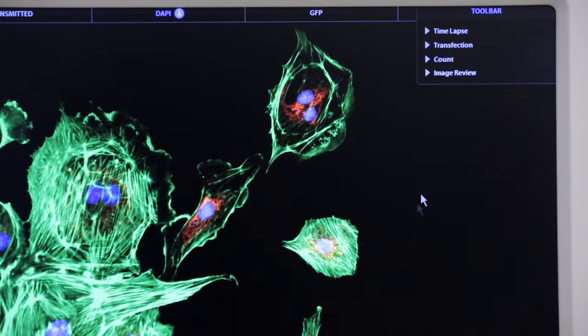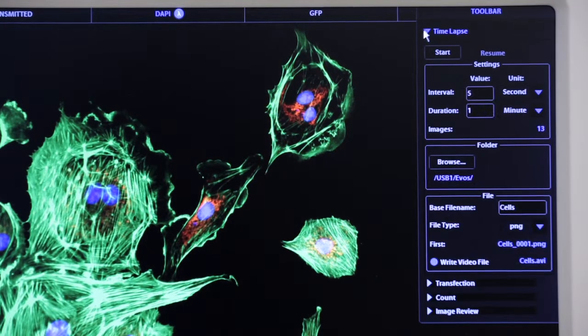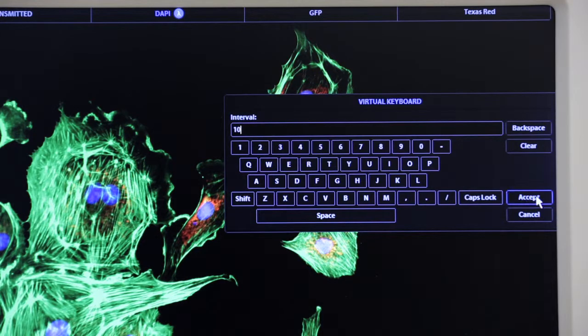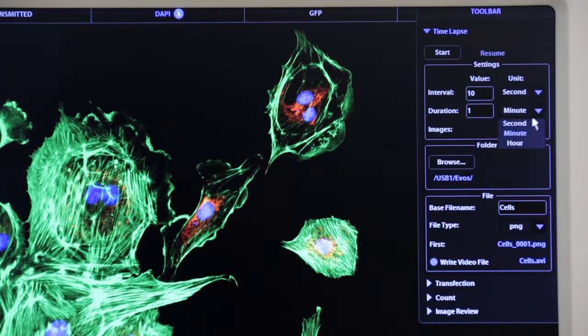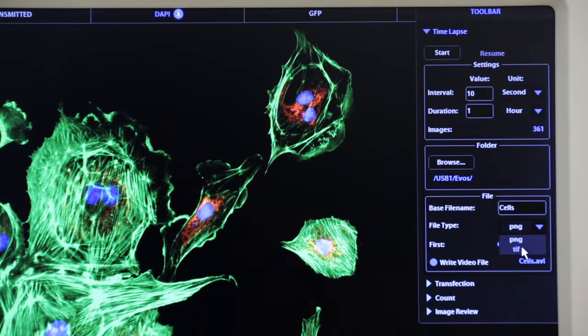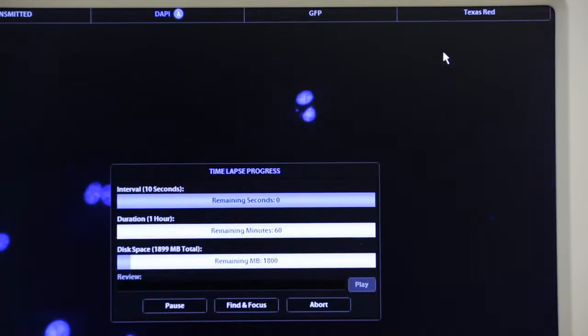The time-lapse feature allows you to program the instrument to record a multitude of individual images over time. Simply set the interval and duration required and the EVOS FL imaging system will collect the images and create an AVI file. You can also choose to save each individual image separately.